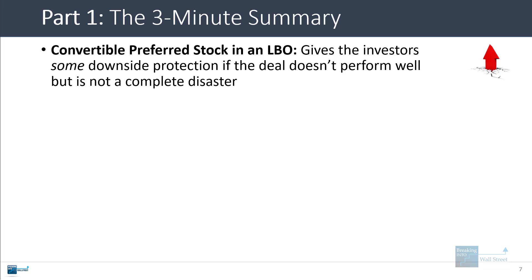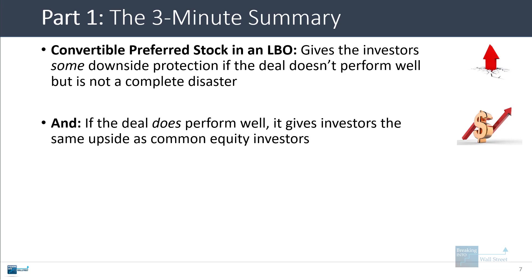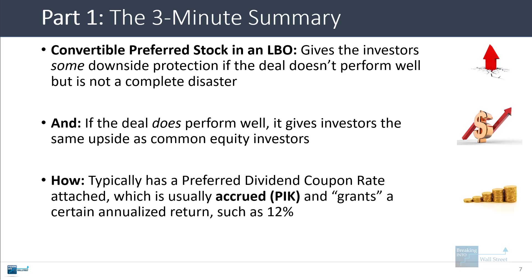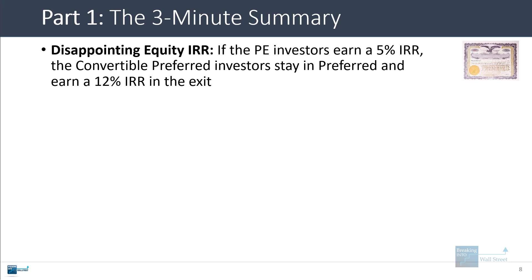Convertible preferred stock in an LBO gives investors some downside protection if the deal doesn't perform well — maybe it has mediocre results with a 5–10% annualized return. If the deal does perform well and gets to a 20–25–30% IRR, the convertible preferred investors can convert into common shares and get that same IRR. Typically it has a preferred dividend coupon rate that is accrued or paid in kind, boosting the convertible preferred balance each year, effectively giving a certain annualized return such as 12%.